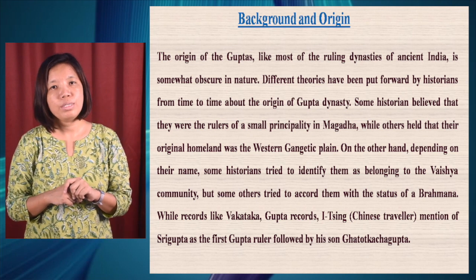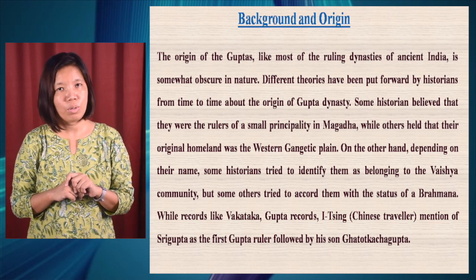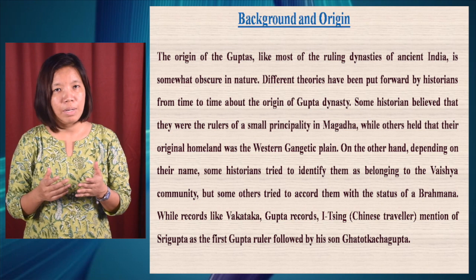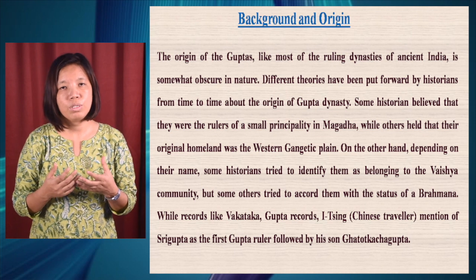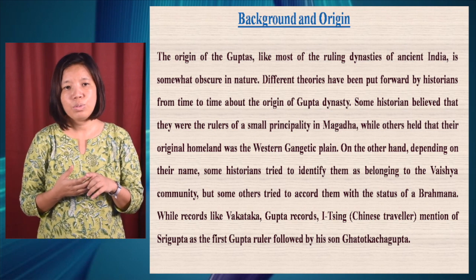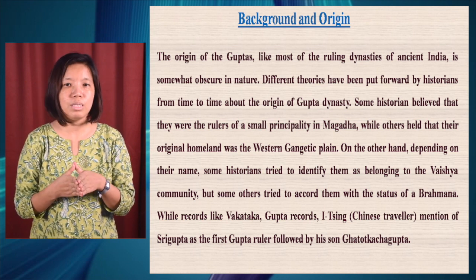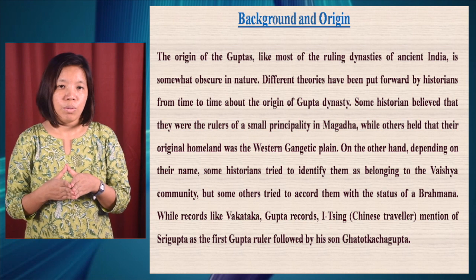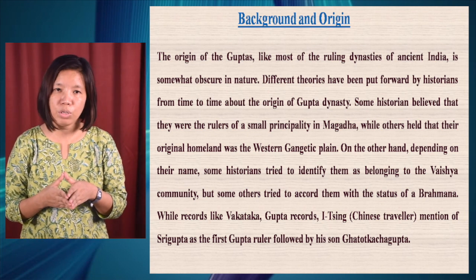Let us move on to understand the background or origin of the Guptas. There are very limited sources when you try to understand the origin of the Guptas. There are different theories put forward by historians. Some say they were rulers of a small principality in Magadha, while others say they had a base in the Western Gangetic Plain. Others say their name indicates they were from the Russia community, while others accord them the status of Brahmana. Records like the Vakataka records, the Gupta records, and the Chinese traveler Yi Jing mention the two earliest Gupta rulers by the name of Sri Gupta and Ghatotkaja.